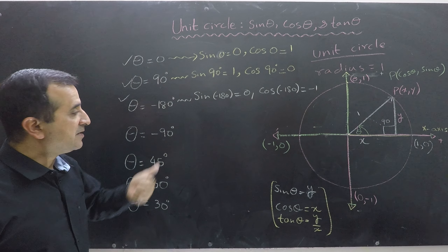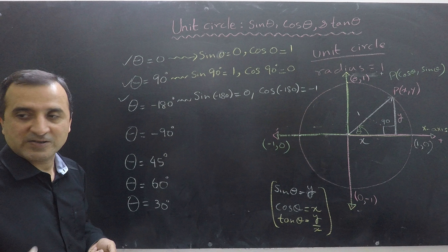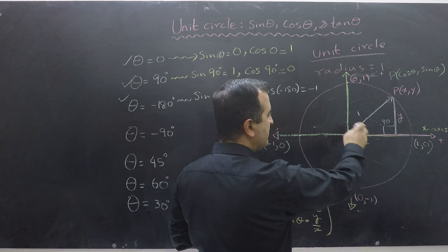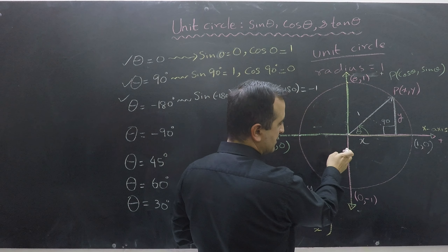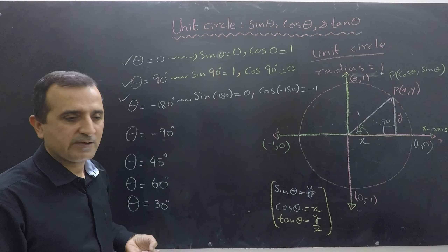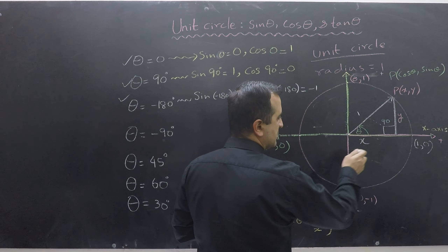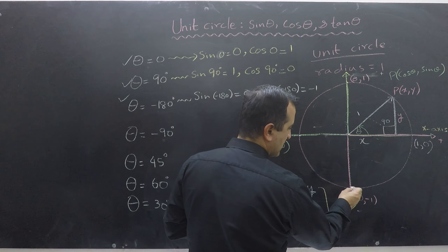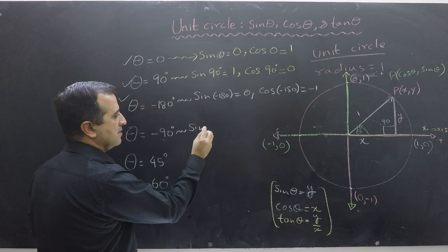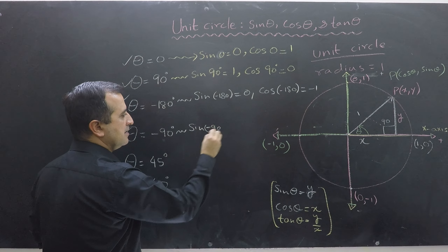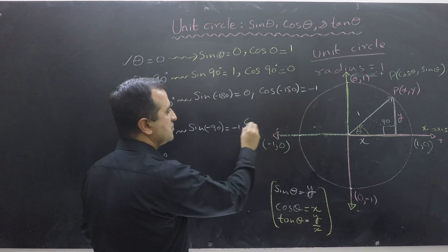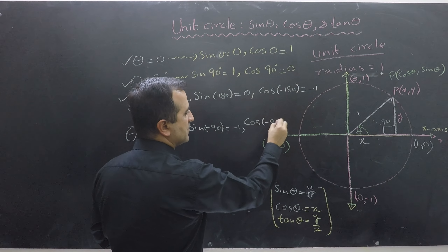However, minus 90 and plus 90 do not give the same answer. If we go to plus 90 we reach the top line; if we go to minus 90 we reach the bottom line. Travelling clockwise to minus 90, we get sine(-90) equals y, which is minus 1, and cos(-90) equals 0.